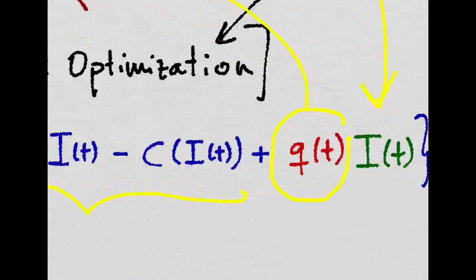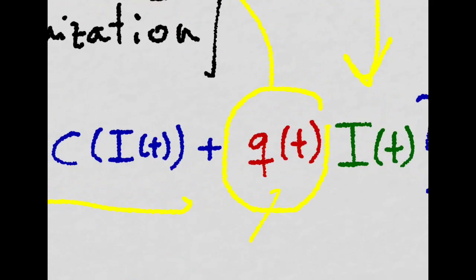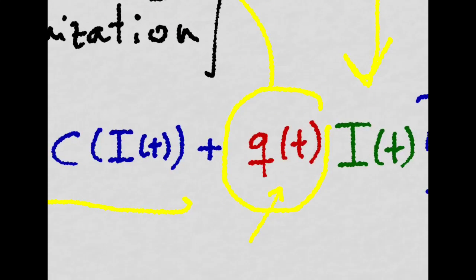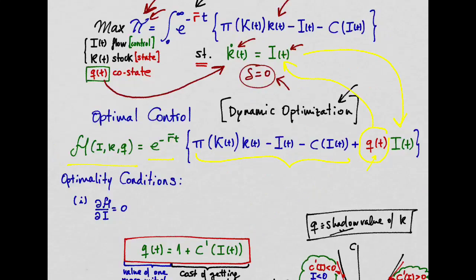Concluding, q is basically the value of adding one more unit of capital for the firm. Watch my next video to see how to solve this problem in terms of the price of the firm.